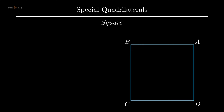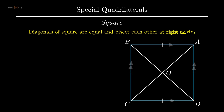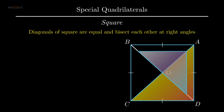A square is a polygon in which all four sides are equal and pairs of opposite sides are parallel. Each vertex angle of a square is a right angle, that is 90 degrees. Diagonals of a square are equal and bisect each other at right angles. In order to prove diagonals of a square are equal, consider triangle ADC and triangle BAD.